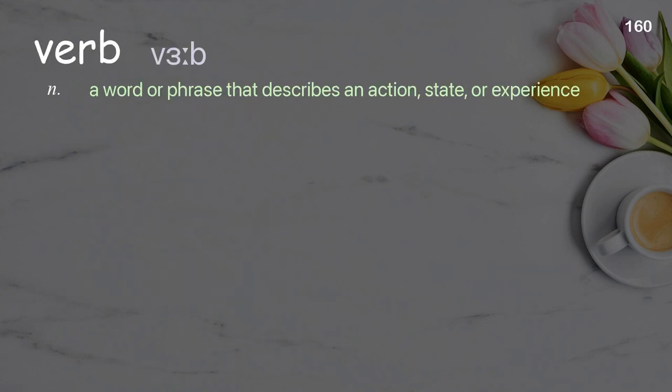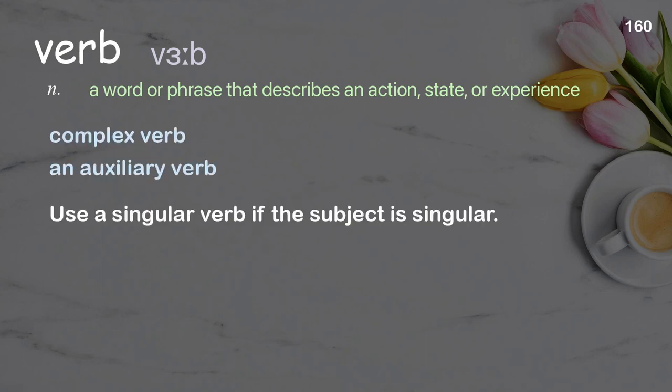Verb. A word or phrase that describes an action, state, or experience. Examples: complex verb, an auxiliary verb. Use a singular verb if the subject is singular.